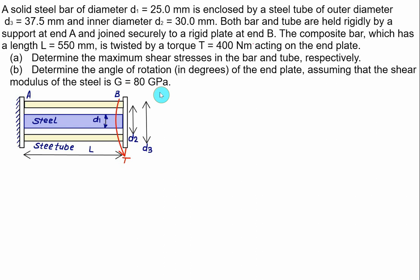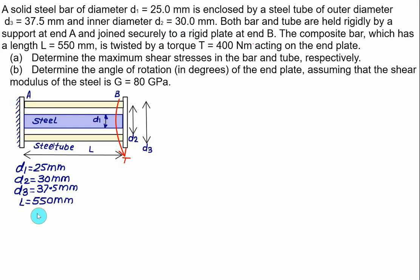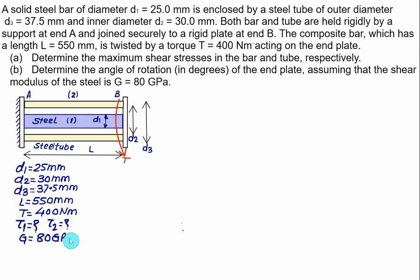The shear modulus G is given as 80 GPa. We have D1 = 25 mm, D2 = 30 mm, D3 = 37.5 mm, length L = 550 mm, and torque T = 400 Nm. We need to find tau in the solid shaft (subscript 1) and tau in the hollow shaft (subscript 2), as well as the angle of rotation theta_B at point B.